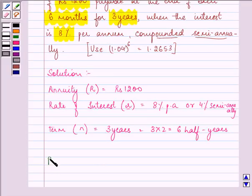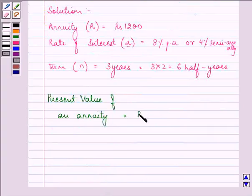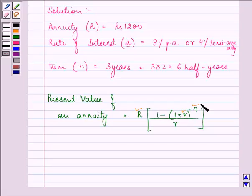Now, we know that the formula to find out the present value of an annuity is equal to R into 1 minus (1 plus r) raised to the power minus n upon r. We have the value of R, capital R, small r and n.